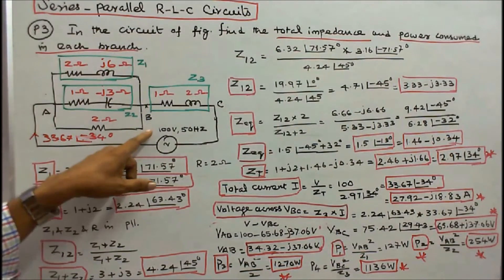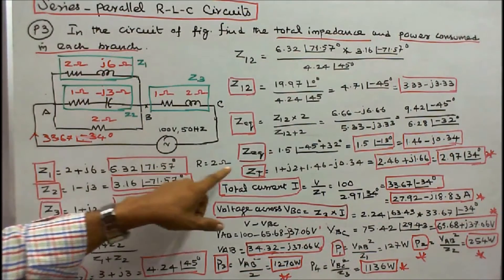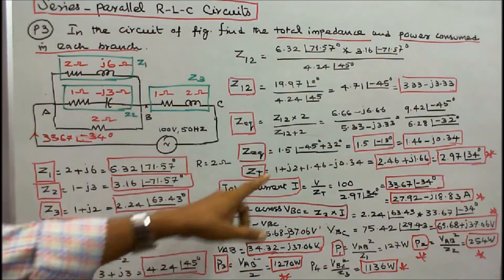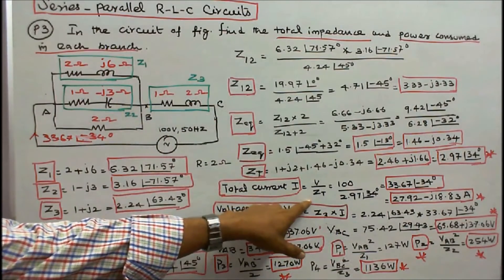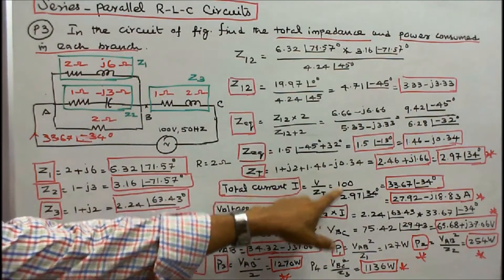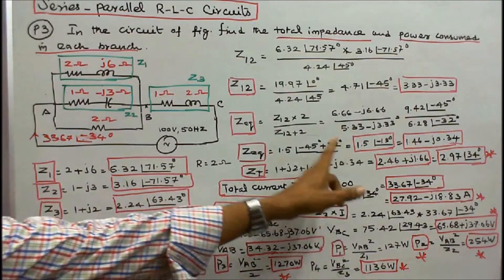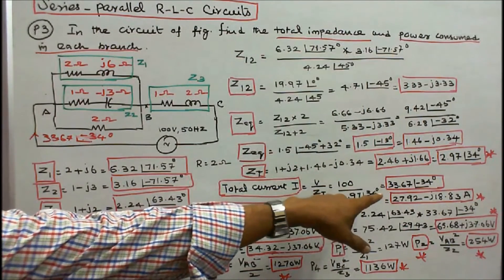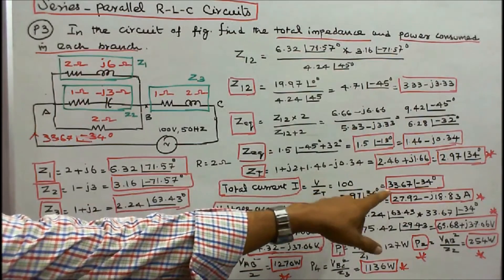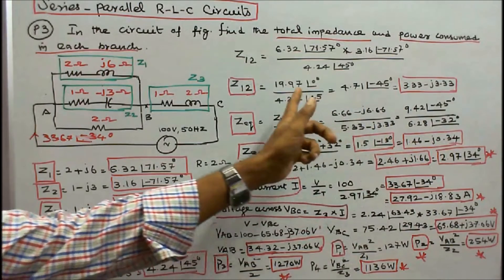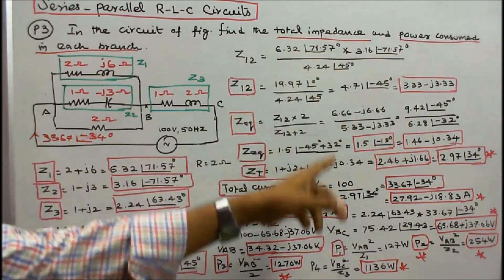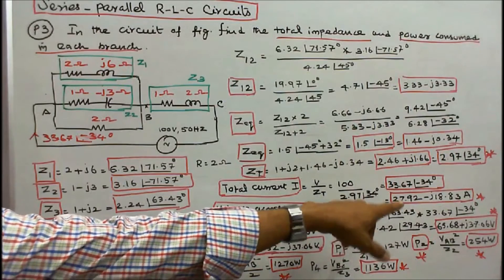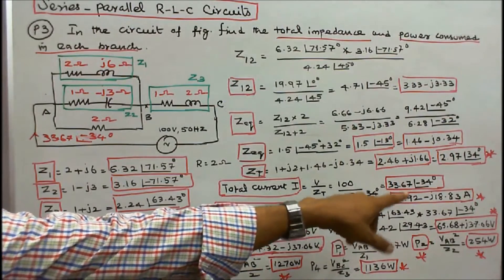I know the voltage and the total impedance, so I can find the current: I = V / ZT = 100 / 2.97∠34° = 33.67∠−34° in polar form, or 27.92 − j18.83 amps in rectangular form. That is the total current.